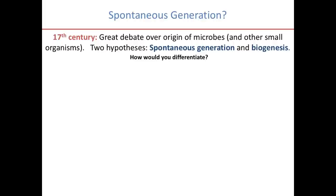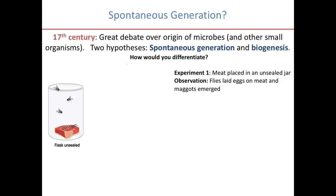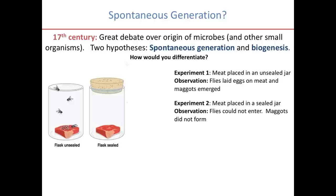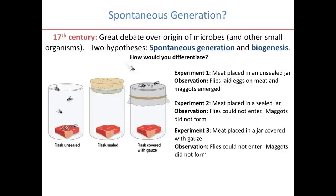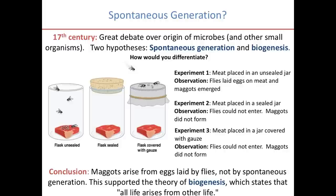The very first experiments weren't focused on microorganisms but other small organisms. In one experiment, they placed meat in an unsealed jar — flies laid eggs on the meat and maggots emerged. In the second experiment, meat was placed in a sealed jar; the flies could not enter and maggots did not form. In the third experiment, meat was placed in a jar covered with gauze; flies couldn't enter and maggots did not form.